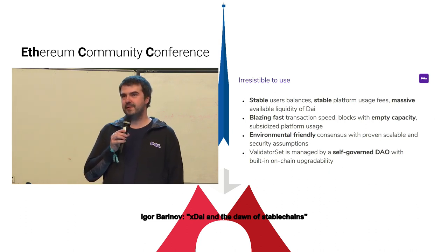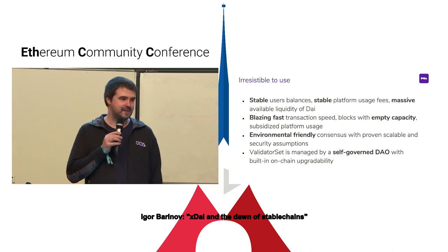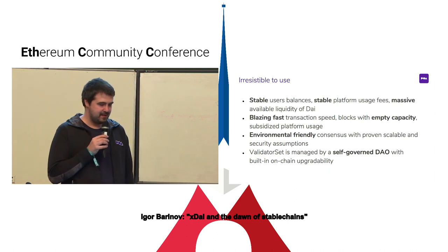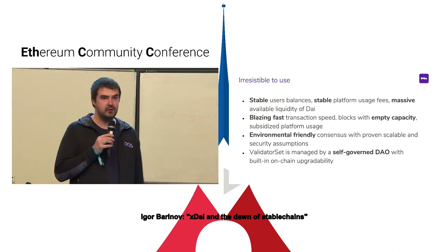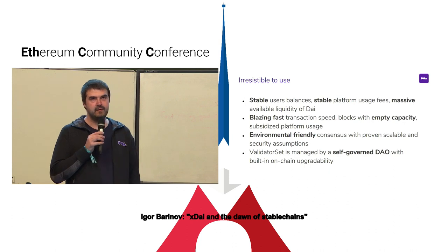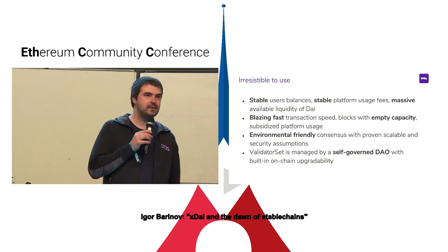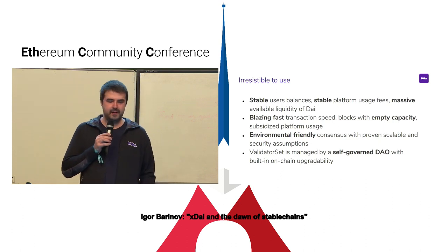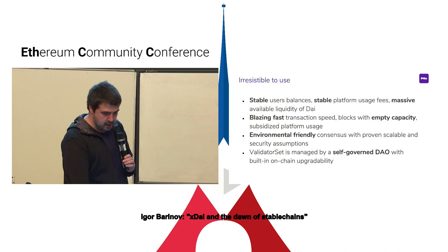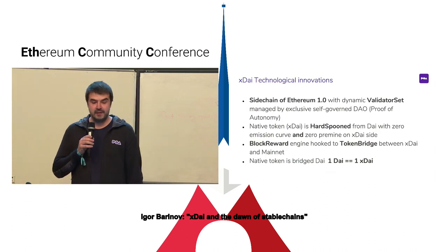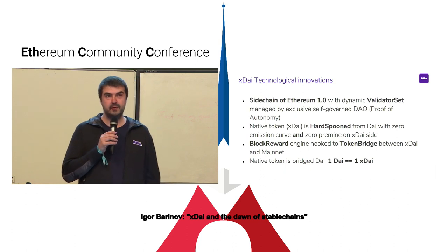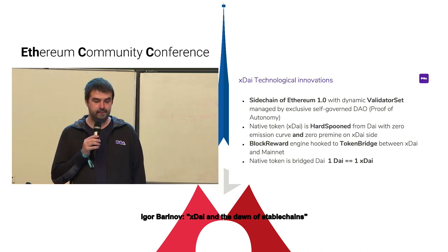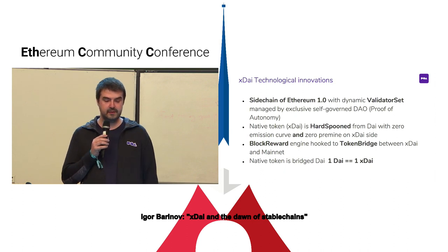Three validators are required to add or remove a validator, and with four validators there is at least one that can be kicked and more can be added. The initial validators who started this network are POA, MakerDAO, Protofire, and Giveth. Now there are five more applications from Burner Wallet, Alpha Wallet, and Portis - interestingly many wallets are applying to be validators. Mike Riepte and Helena Network are also discussed as potential validators.